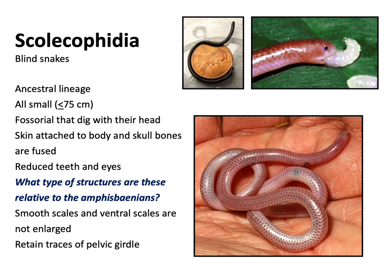The scolecophidia are the blind snakes — the ancestral lineage. Evolutionarily speaking, they're small snakes that live in the ground and look very much like amphisbaenids, sharing many characteristics such as reduced eyes. Unlike them, though, they have skin actually attached to their body — you can't roll their skin around like a sleeping bag. They don't have the annulate rings; instead they have scales. When you look at their internal anatomy, they still have a pelvic girdle, suggesting they had limbs evolutionarily at some point.